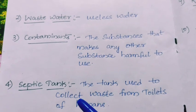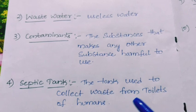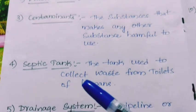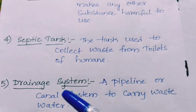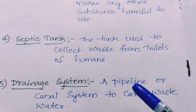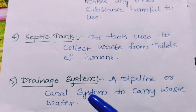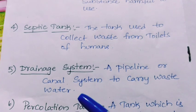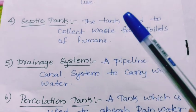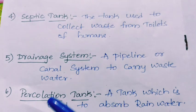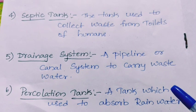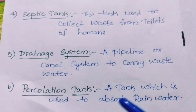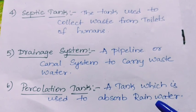Next, septic tank — the tank used to collect waste from toilets of human beings. Drainage system — a pipeline or canal system to carry wastewater. Next, percolation tank — a tank which is used to absorb rainwater.